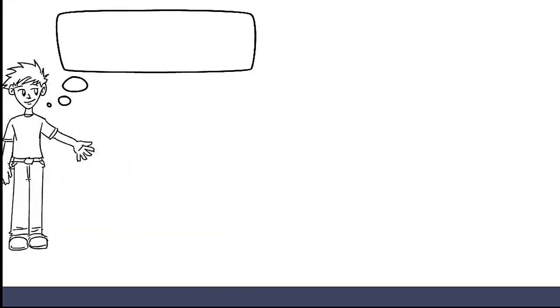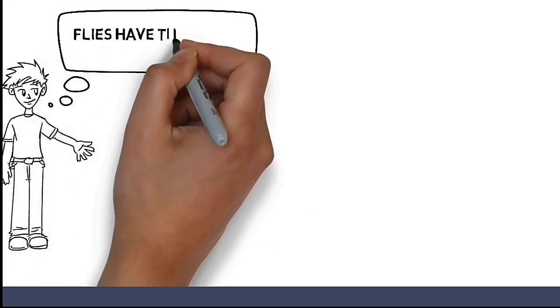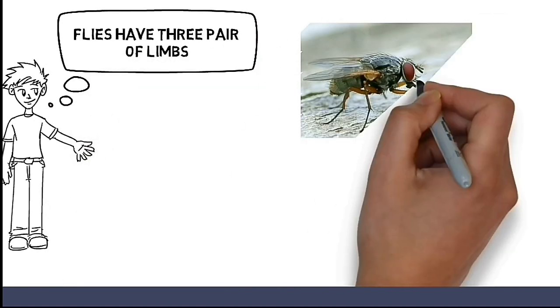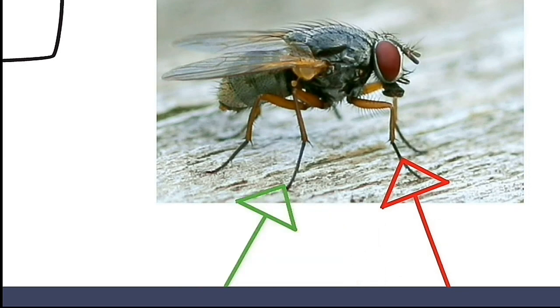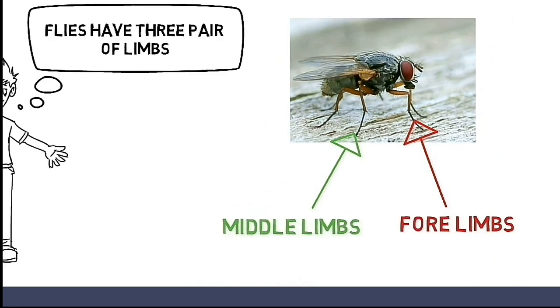First of all, it's important to note that flies have three pairs of limbs: the forelimb, the middle limb, and the hind limb.